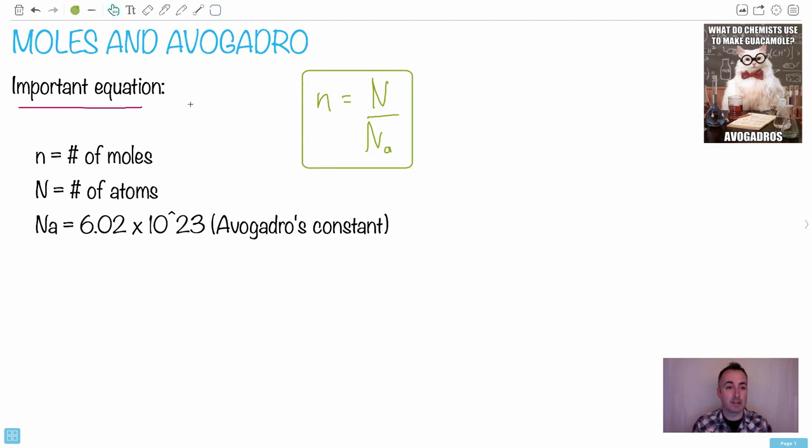So what this really means: the n is the number of moles, this is the important thing to be counting. Capital N is the number of atoms you have, and Na, this N with a little subscript a, that's 6.02 times 10 to the 23, which is known as Avogadro's constant.